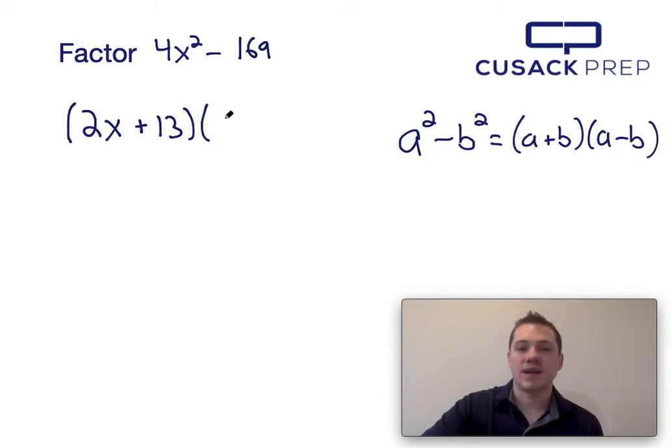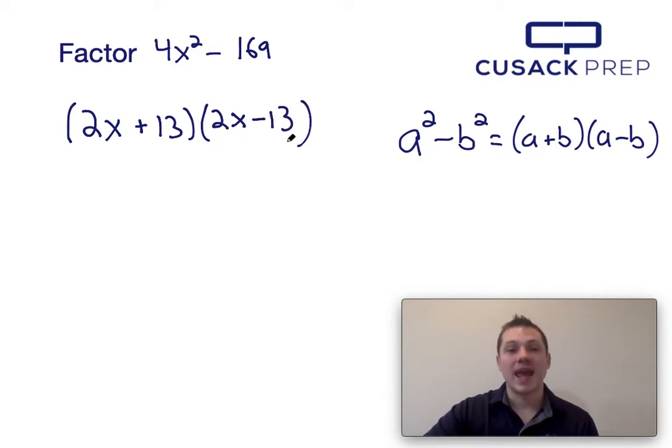So 4x squared minus 169 can factor into 2x plus 13 times 2x minus 13 via the difference of squares. And that's how you factor 4x squared minus 169.